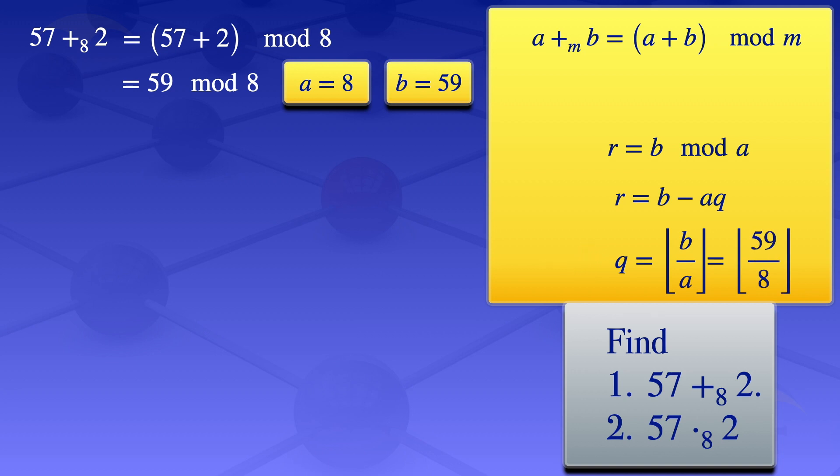I can now substitute the values of a, b, and q into the formula for the remainder b minus aq. The remainder is 59 minus 8 times 7, which gives us a result of 3. So 57 plus 2 mod 8 equals 3.